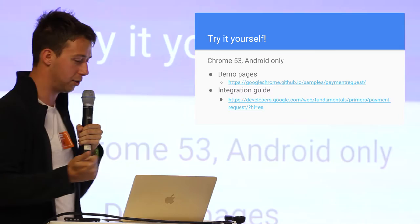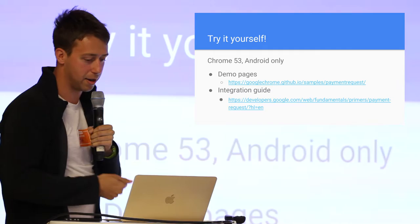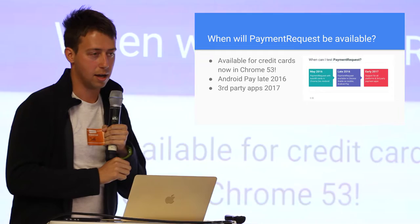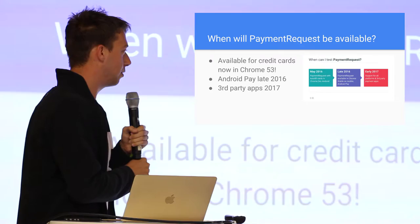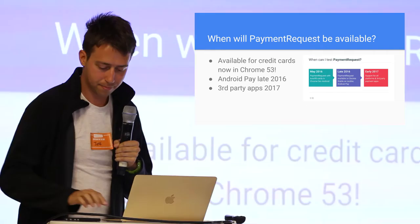In Chrome 53, which is out right now, if you have an Android it is available. There are demos you can try at the link I'll distribute with this presentation. As for a timeline: Chrome 53 is out now for raw credit card transactions. Android Pay was said to be late 2016 in the Google I/O talk, then early 2017 for third-party apps — by apps they mean different payment instruments, so for instance PayPal could build one.